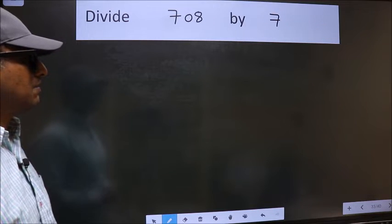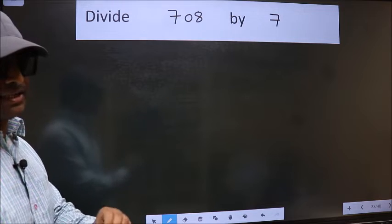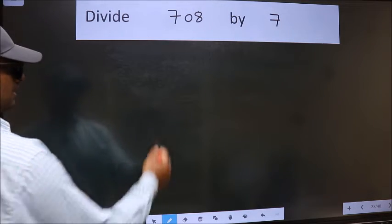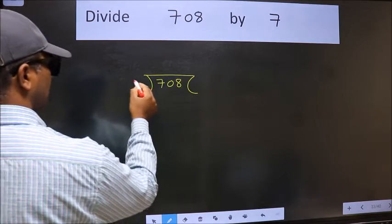Divide 708 by 7. To do this division we should frame it in this way. 708 here and 7 here.